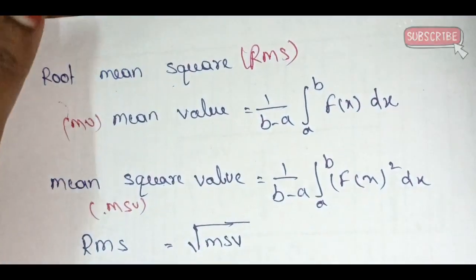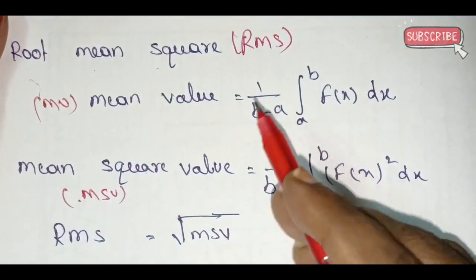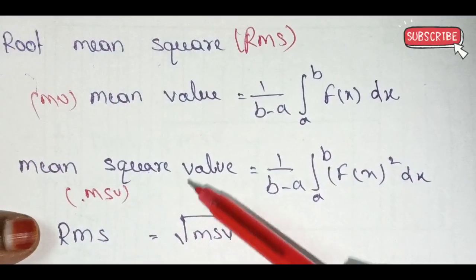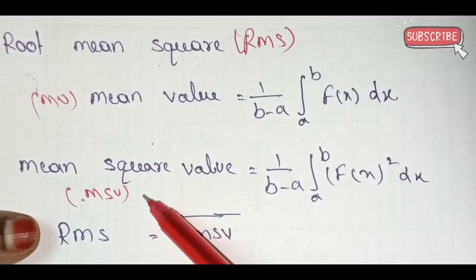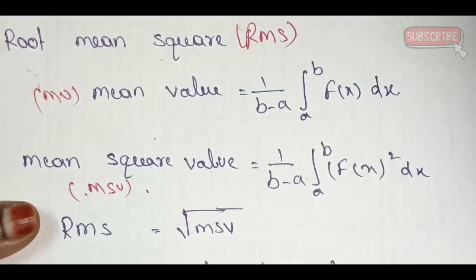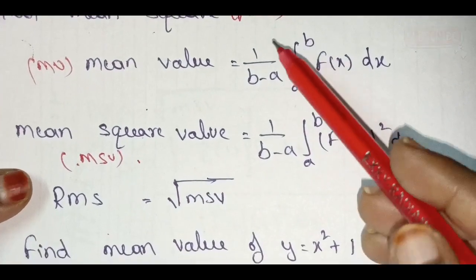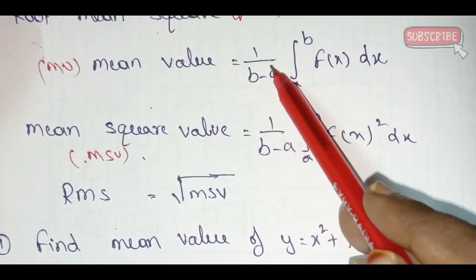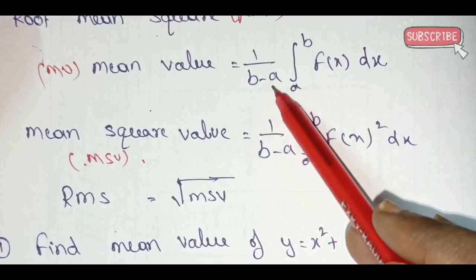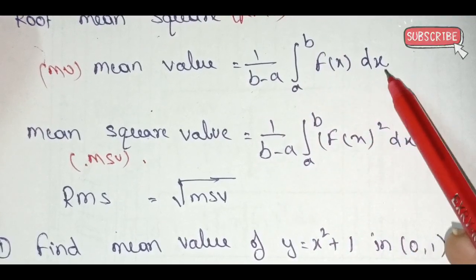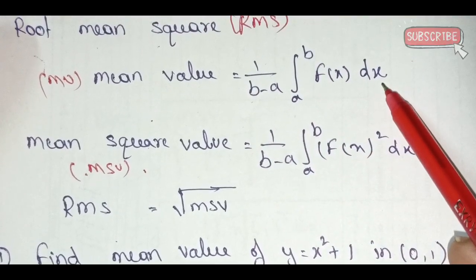So we will try to solve MV, MSV, and RMS. The mean value (MV) formula is: 1 by (b minus a), integral from a to b of f(x) dx.